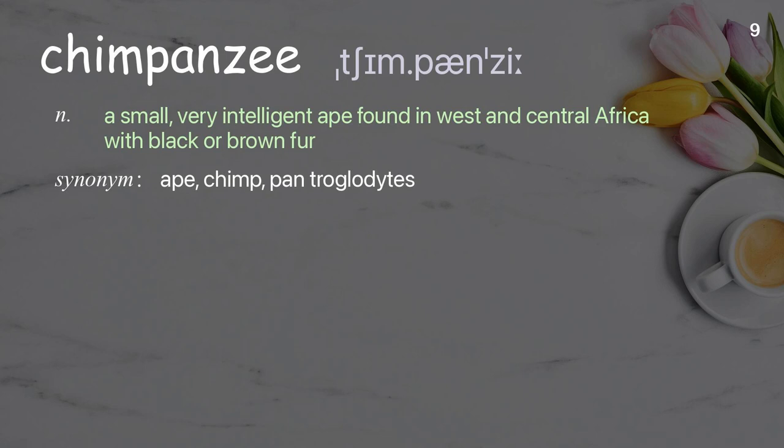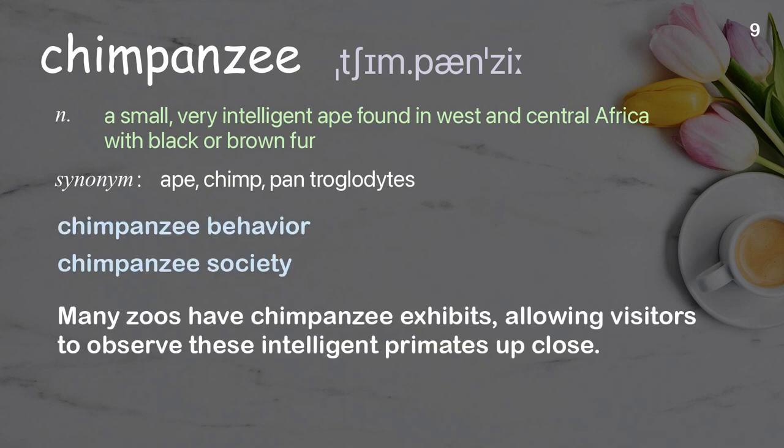Chimpanzee: A small, very intelligent ape found in West and Central Africa with black or brown fur. Examples: Chimpanzee behavior. Chimpanzee society. Many zoos have chimpanzee exhibits, allowing visitors to observe these intelligent primates up close.